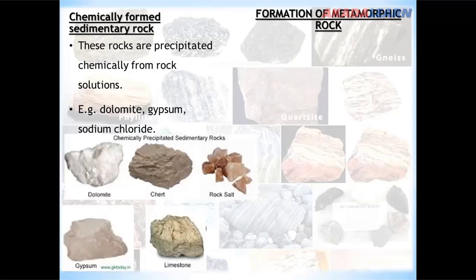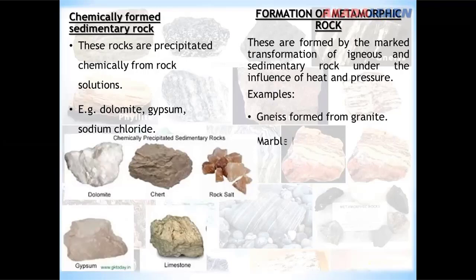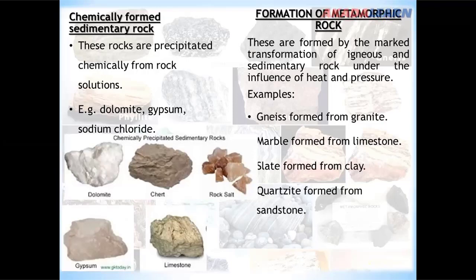Metamorphic rocks are formed by the transformation of igneous and sedimentary rocks under the influence of heat and pressure. Examples include: gneiss formed from granite, marble formed from limestone, slate formed from clay, quartzite formed from sandstone, schist formed from shale, and graphite formed from coal.